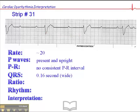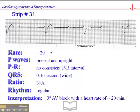If we continue on, the QRS is wide, and that's consistent with a third degree AV block. The ratio is not applicable. The rhythm is regular, which suggests that these QRS complexes are coming from a single focus — consistent with a third degree AV block. And the rhythm is, in fact, a third degree AV block with a heart rate of 20 to 25 beats per minute.